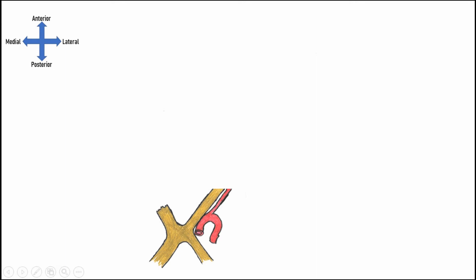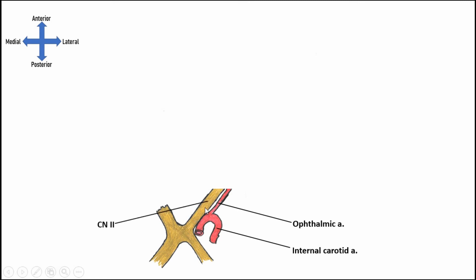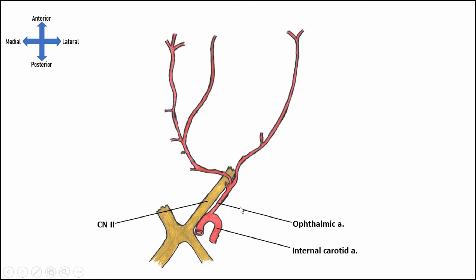To investigate the branching of the ophthalmic artery, we start with its origination off the internal carotid artery. It is the first branch off the internal carotid artery inside the skull, and it travels anteriorly along with cranial nerve II, the optic nerve. Once inside the orbit, the ophthalmic artery branches into several distinctive branches. One of the earliest and most important is the central artery of the retina, which dives into the optic nerve and will be seen on the back of the retina during ophthalmic examination.